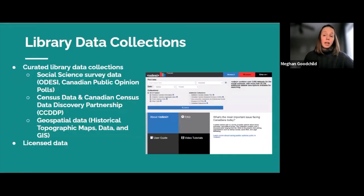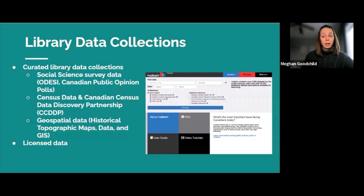Many libraries are increasingly using the repository for providing access to and preservation of curated library data and licensed data collections. Borealis supports social science survey data collections with rich data descriptions, geospatial data, Canadian public opinion polls, census data, and historical topographic maps. This year, we will be migrating the OCUL Odyssey repository and collections to Borealis.